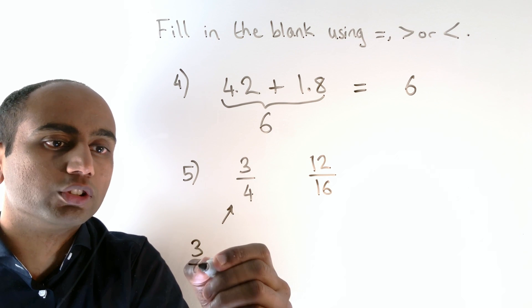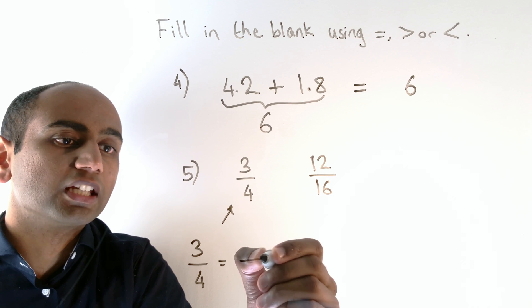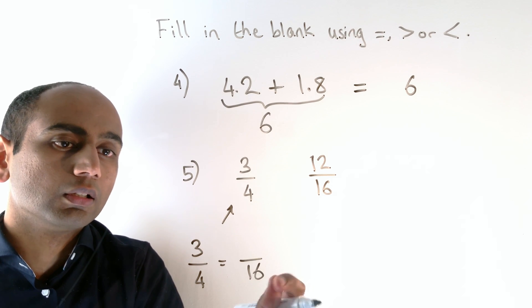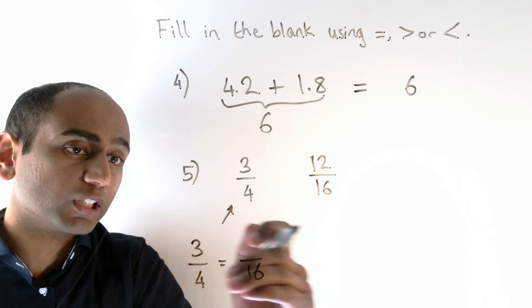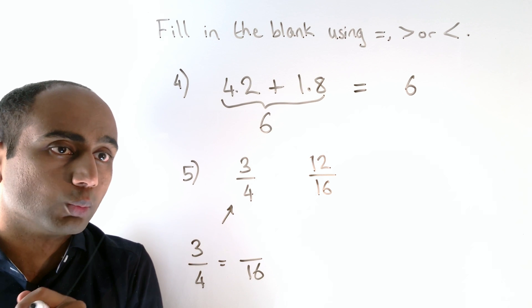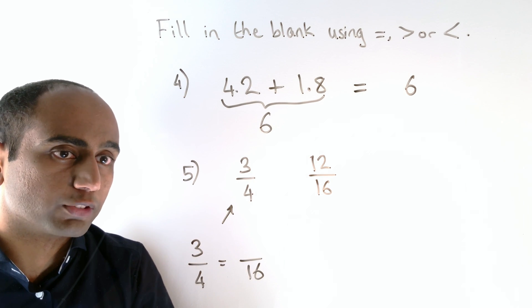Let's turn three quarters into something over sixteen. What we're doing here is multiplying the denominator by four, so we're going to have to multiply the numerator by four as well.